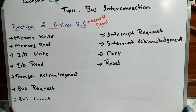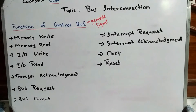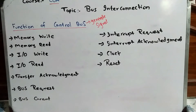The third function is I/O write. If you want to write data to an input or output device, the address bus will assign the address of the device, and the data bus will carry the data which you want to write to the input or output device.